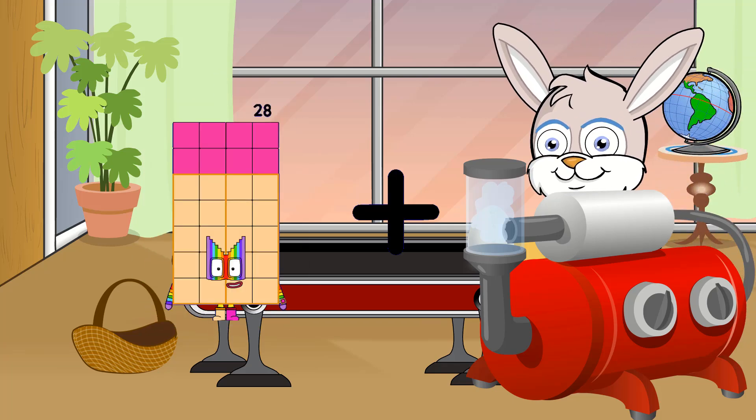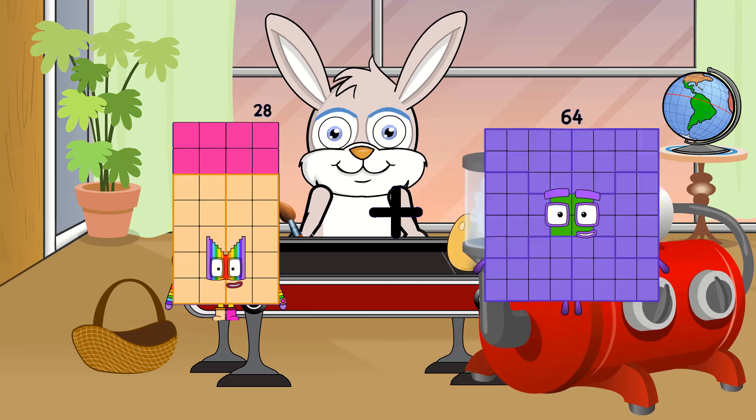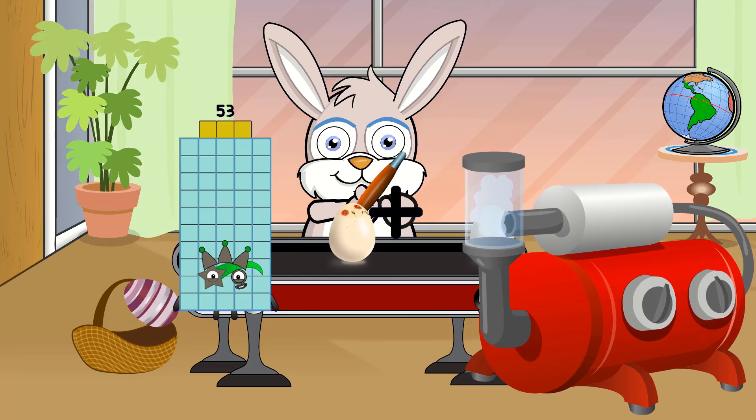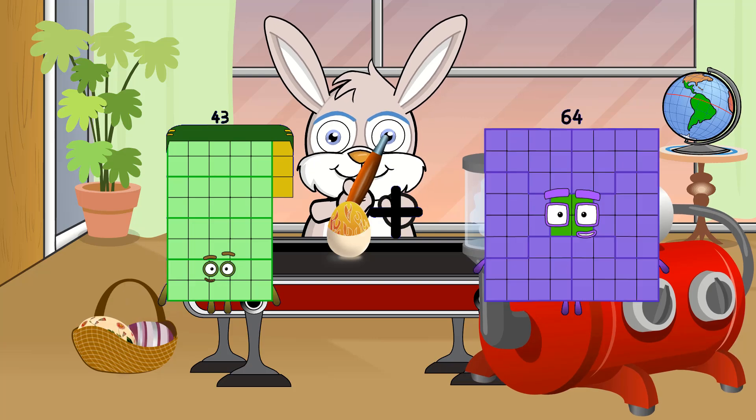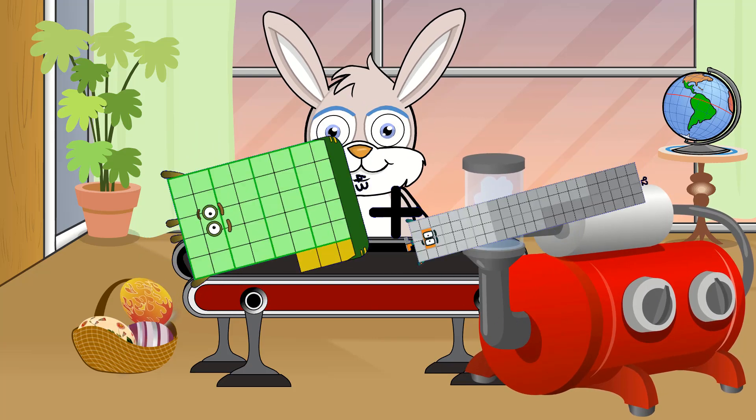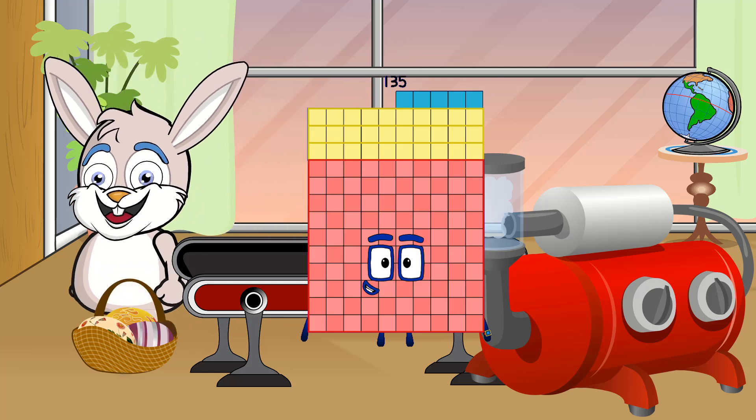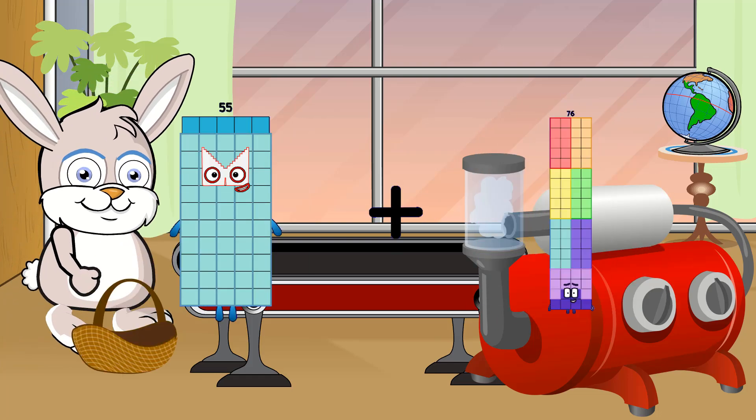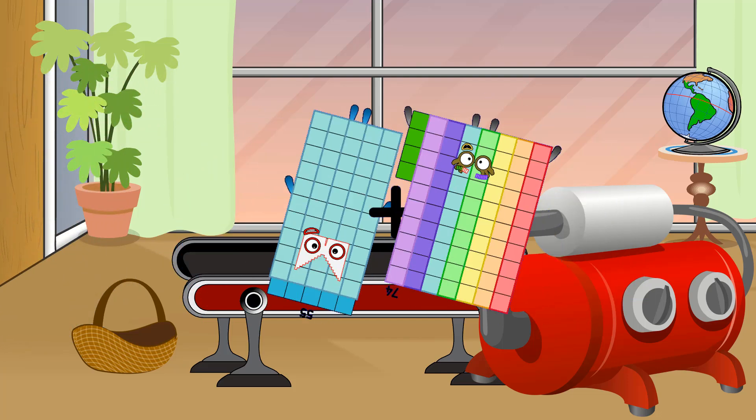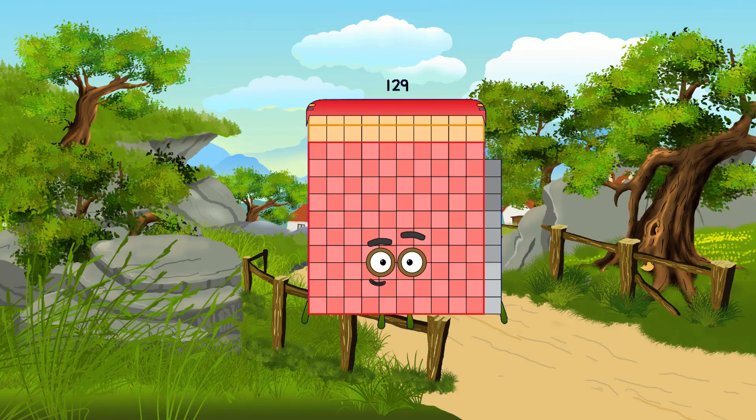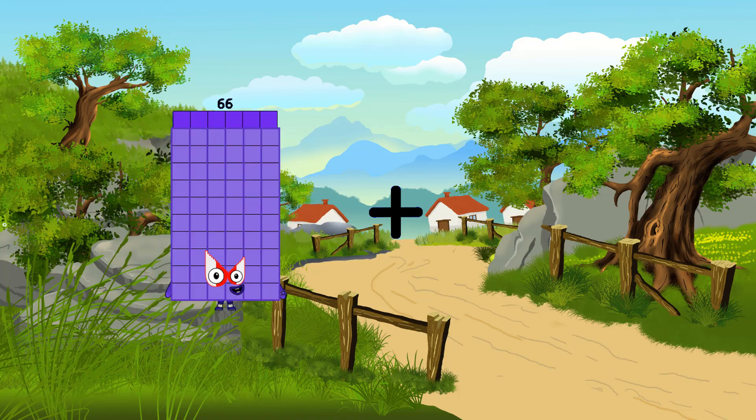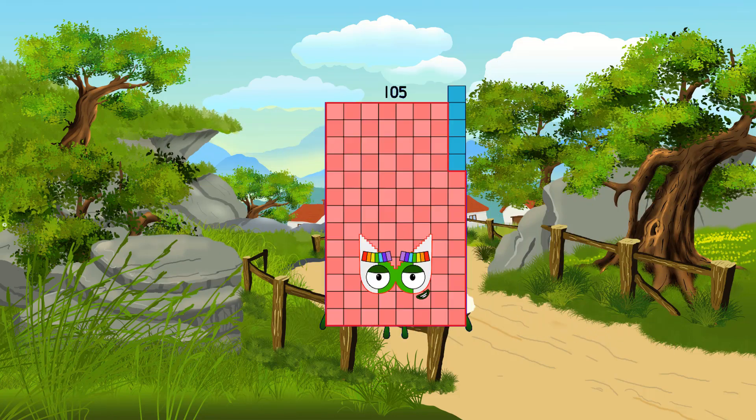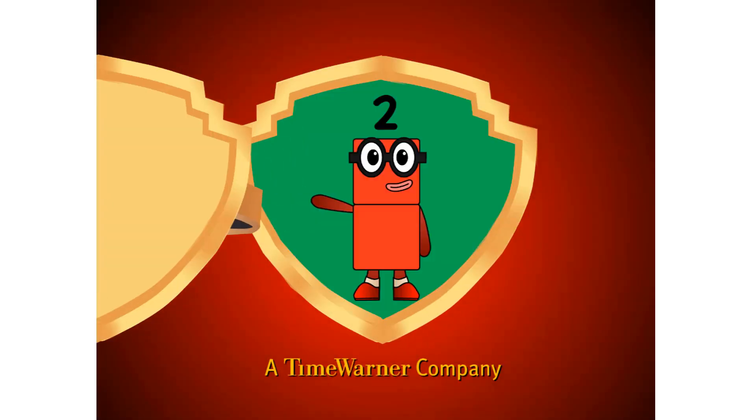28 plus 39 equals 67. 43 plus 92 equals 135. 55 plus 74 equals 129. 66 plus 39 equals 105. That's all folks.